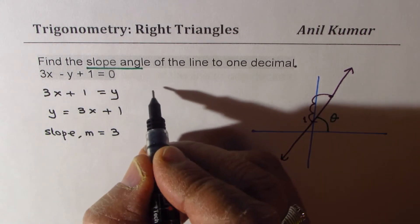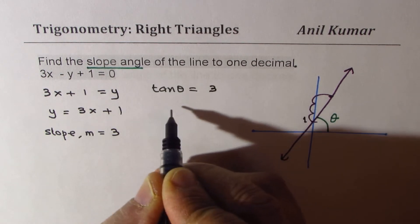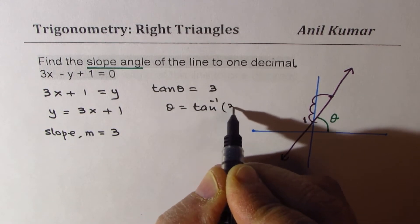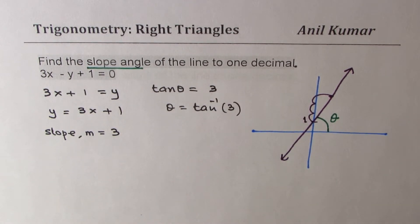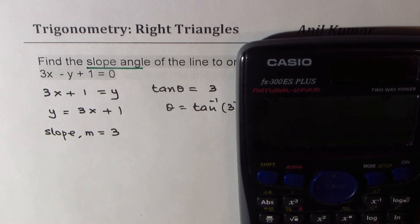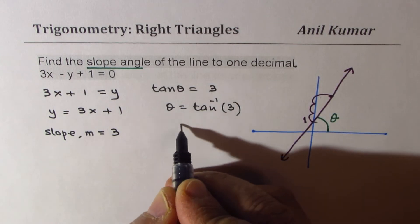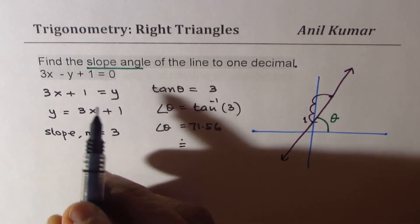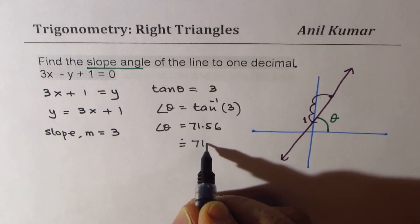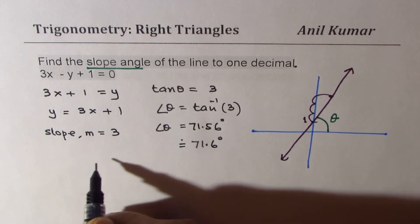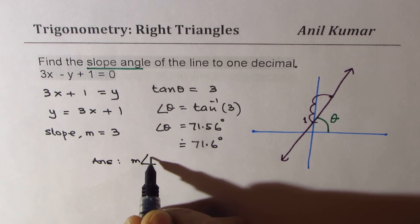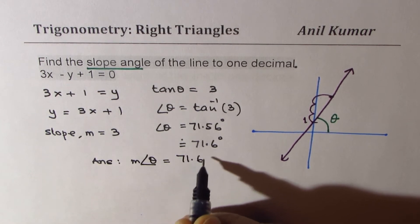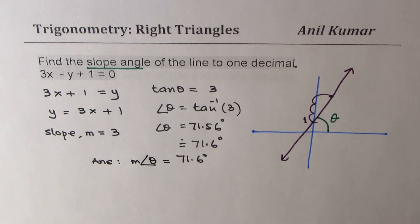So tan theta is defined as rise over run. So we write tan theta is equal to 3, and theta will be equal to tan inverse of 3. That is how we actually find the slope angles, very simple. Use calculator: shift tan inverse of 3 equals 71.56. So we get the angle theta is 71.56 which you could round to one decimal place which is 71.6 degrees. Our answer is the measurement of this angle theta is equal to 71.6 degrees.